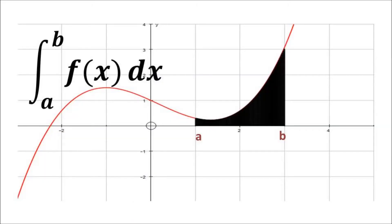Definite integral from a to b of f(x) dx is nothing but the area under the given curve, as shown in the figure. It means if we find the area under the curve, that area will be equal to the definite integral from a to b of f(x) dx.